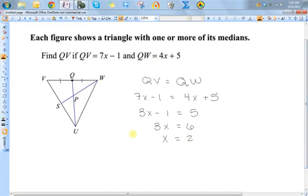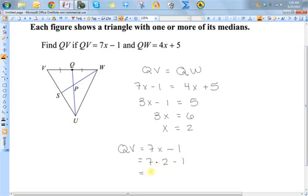Well, we said that QV was equal to 7x minus 1. Now I know what x is, so I just put the 2 in there. So that gives me 14 minus 1, or 13. So QV is equal to 13.